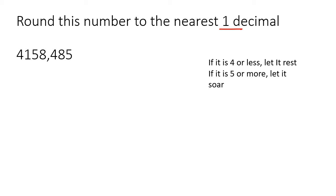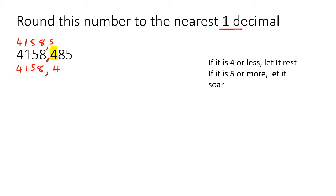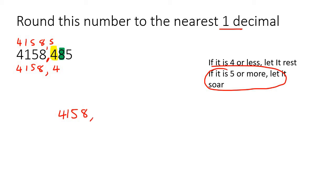This example says round to the nearest one decimal. You go to the decimal and count one number to the right — that's going to be this 4. So the possible answers could be 4158,5 or 4158,4. We look at the number on the right. If it is 5 or more, let it soar — soar means let it go bigger. So the final answer is 4158,5.